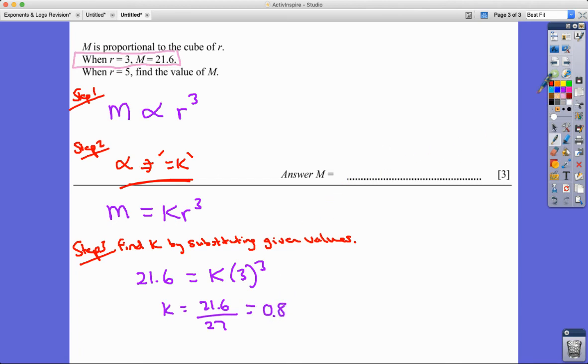Now I know step four. So I'll do step four over here. Write the equation with K. So then I'll just write this with the K in, which is 0.8.